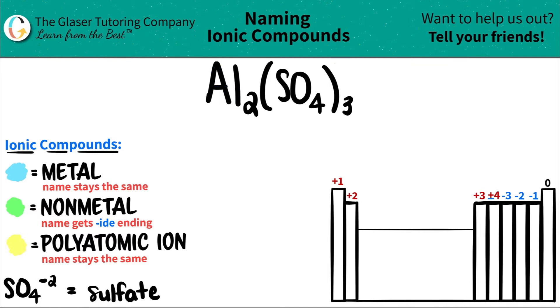In this case we have three different elements. We have Al for aluminum, we have S for sulfur, and we have O for oxygen. So we have the three elements. Let's identify the polyatomic ion and then go from there.